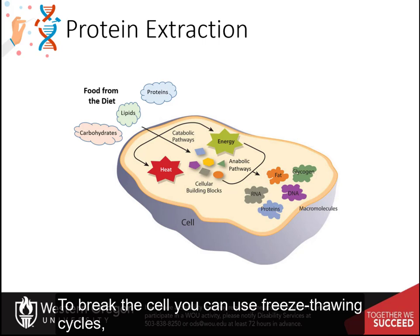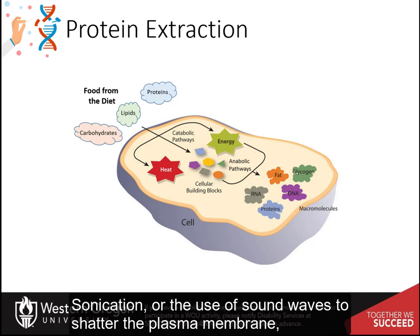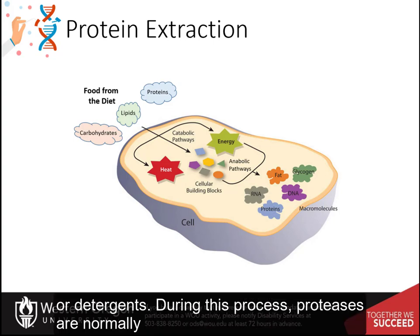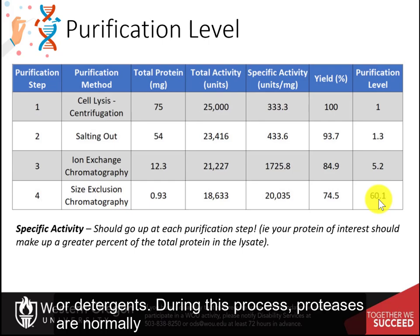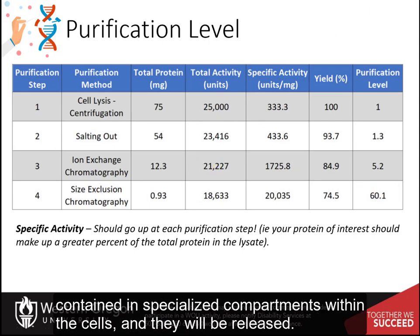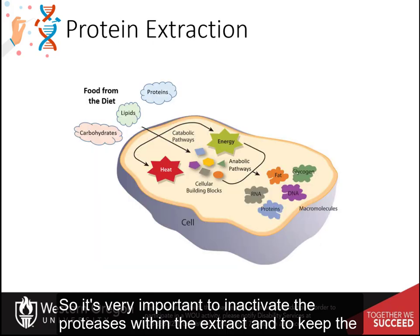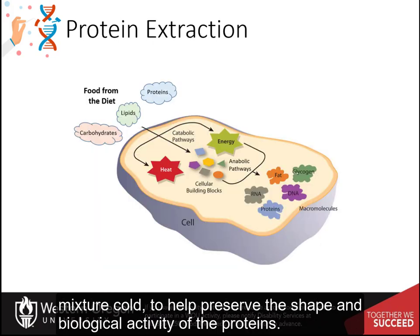To break the cell, you can use freeze-thawing cycles, sonication or the use of sound waves to shatter the plasma membrane and/or the cell wall structure, use of high pressure, grinding, or detergents. During this process, proteases are normally contained in specialized compartments within the cells and will be released. So it's very important to inactivate the proteases within the extract and to keep the mixture cold, to help preserve the shape and biological activity of the proteins.